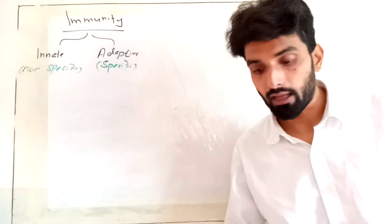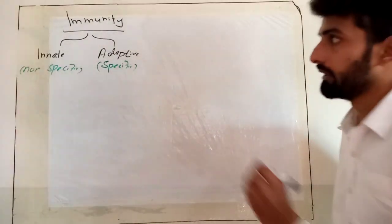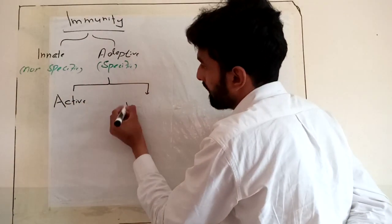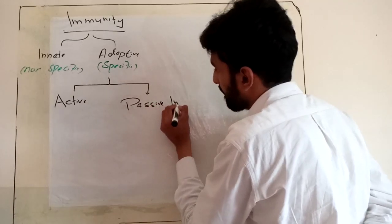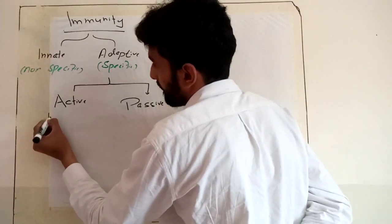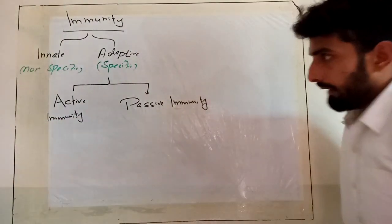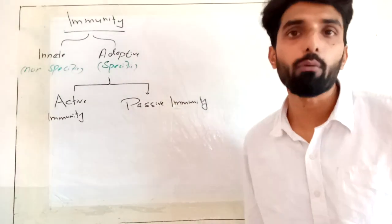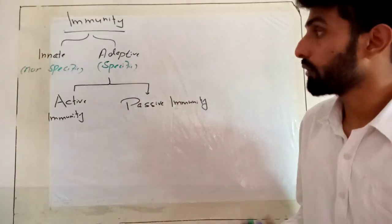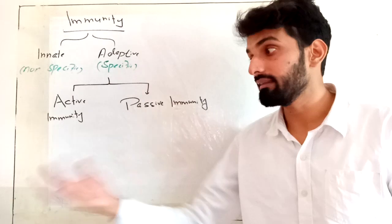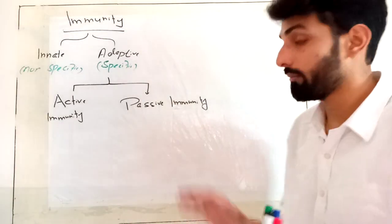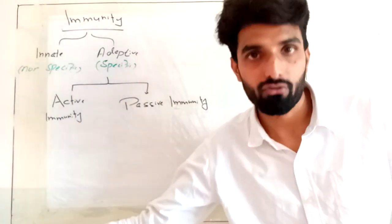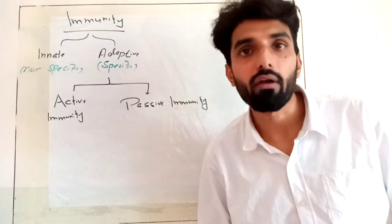Let's talk about the types of adaptive immunity. There are basically two major types of adaptive or acquired immunity. The first one is active immunity and the second one is passive immunity. In active immunity, your immune system is fully active — it is producing antibodies and cytotoxic T lymphocytes. In passive immunity, your immune system is not producing any antibodies; instead, it is getting antibodies from some other host.